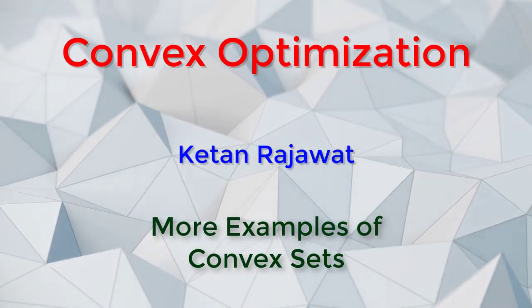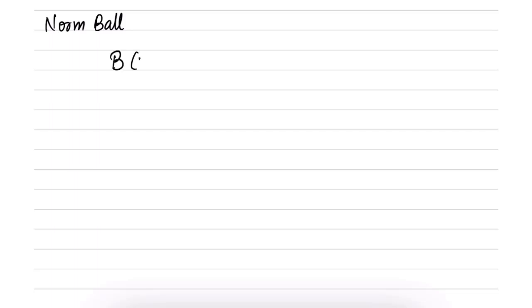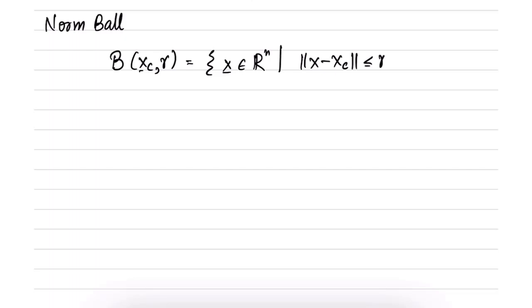Let us consider some more examples of convex sets. First, the norm ball. A norm ball is defined as B, with two parameters: xc, a vector in R^n, and R. It is the set of all x in R^n such that the norm of x minus xc is less than or equal to R, where R is greater than or equal to 0.